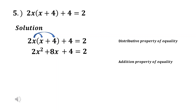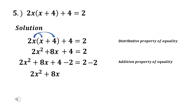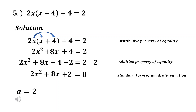We apply the addition property of equality and add the inverse of positive 2, which is negative 2, to both sides. So we have 2x² + 8x + 4 - 2 = 0, giving the standard form 2x² + 8x + 2 = 0. The value of a is 2, the value of b is 8, and the value of c is 2.